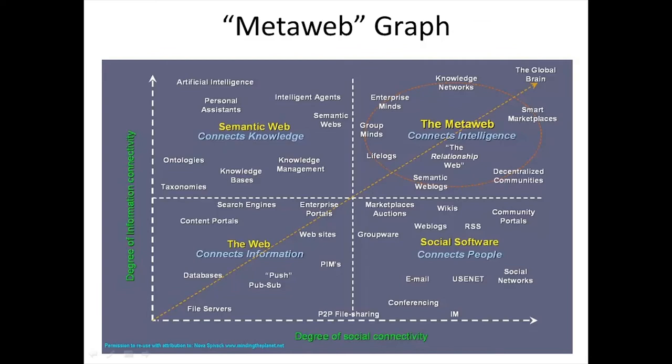This slide presents a slightly different way of looking at a related scenario. Novak Spivak, on his blog Minding the Planet, suggested that internet technologies can be categorized using two dimensions: degree of information connectivity and the degree of social connectivity. This typology becomes a conjecture that we started to explore last week and will conclude this week.